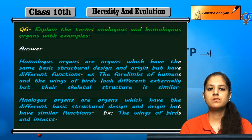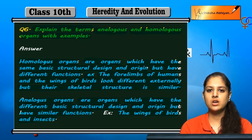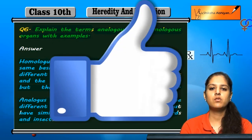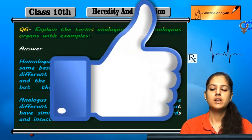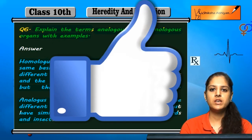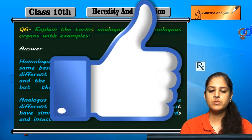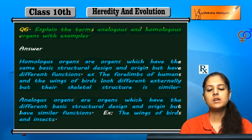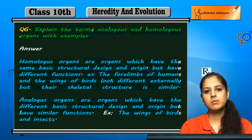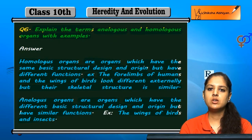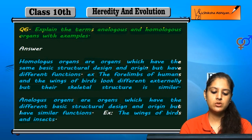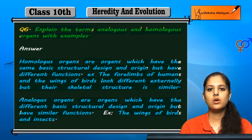For example, the wings of birds and insects. The basic structural design of bird wings and insect wings is different, but they perform the same function — helping in flying. So the function is the same but the structure is different, which is why they are analogous organs.